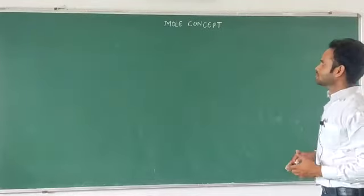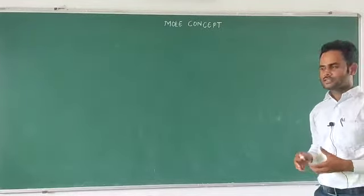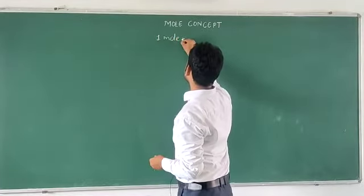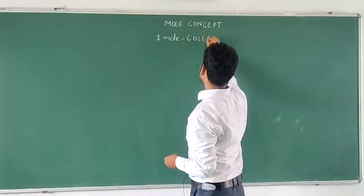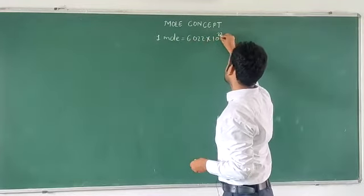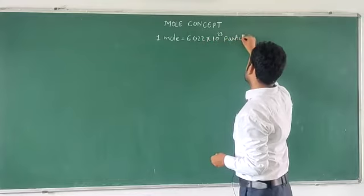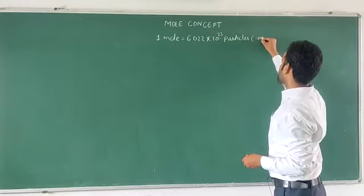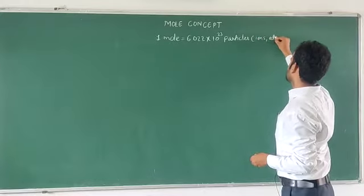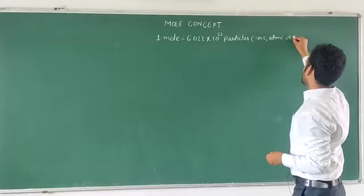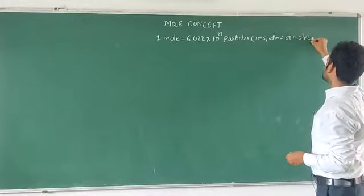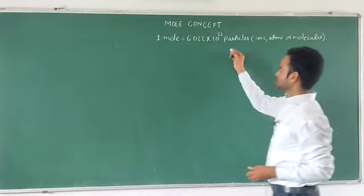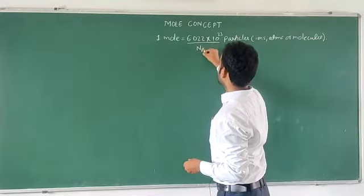In this video, we will talk about the mole concept. Mole is actually just a number — 1 mole is equal to 6.022 times 10 to the power 23 particles. These particles can be anything, like it can be iron, atom, or molecule. So 1 mole is like this, and this number is known as Avogadro's number.